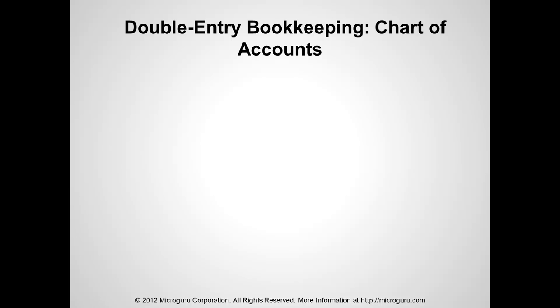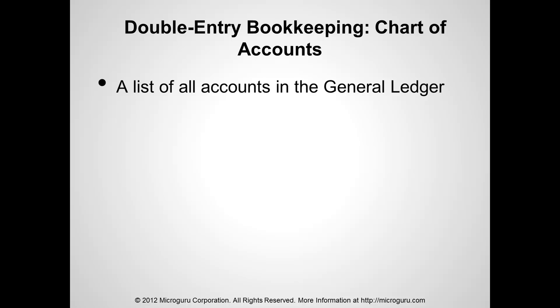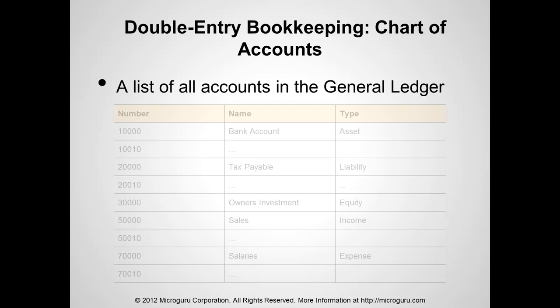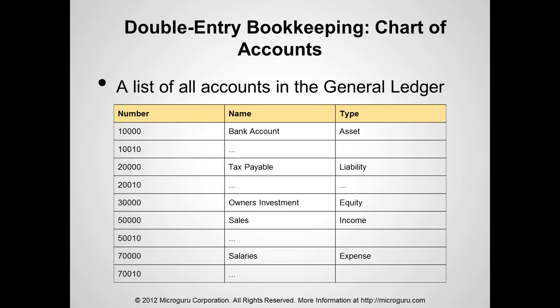In accounting, you will also hear of a chart of accounts. A chart of accounts is a list of all accounts in the general ledger. Here we see a listing of accounts for a business. An account has a number — for example, the bank account has a number of 10,000 and a type of asset. A business would have multiple asset accounts, liability accounts, equity accounts, income accounts, and expense accounts. For example, a company pays salaries, so they would have a salaries expense account; if they buy office supplies, they would also have an office supplies expense account.